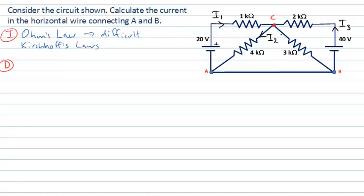I'll choose the current coming down in this part of the circuit to be I4. And then the current I'm actually being asked to calculate — the current between points A and B — I'll choose to be in that direction and call it I5. Now every part of my circuit has been labelled by the current moving through that part. If I can find the relationships between those various currents, I should be able to calculate a value for I5.